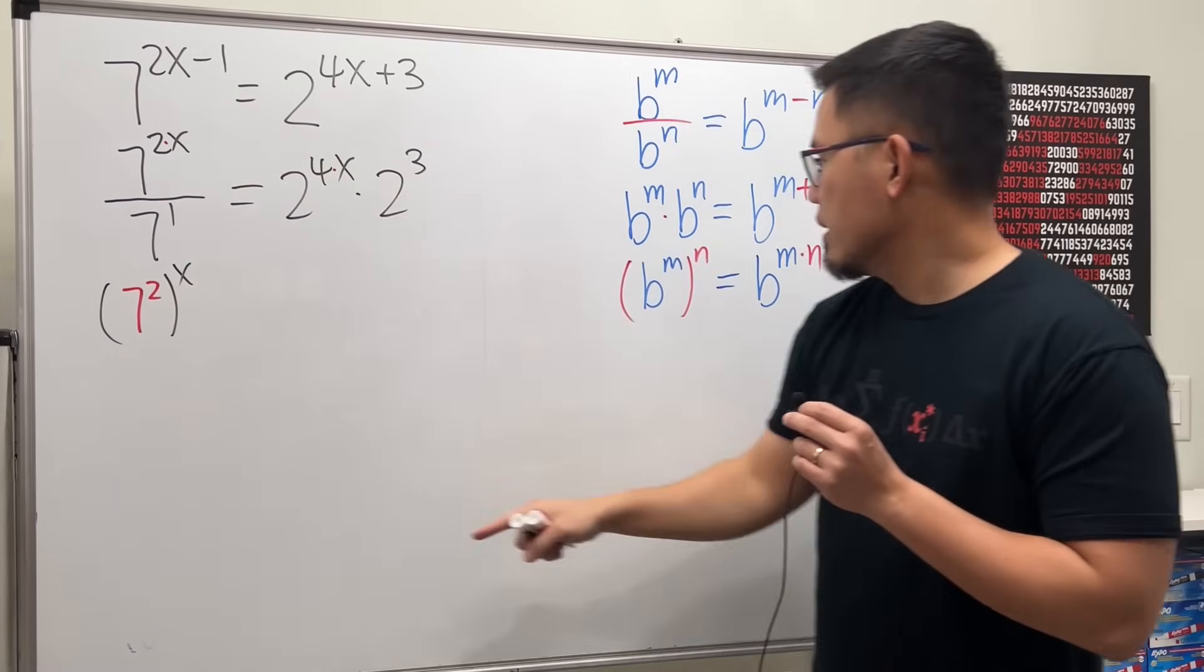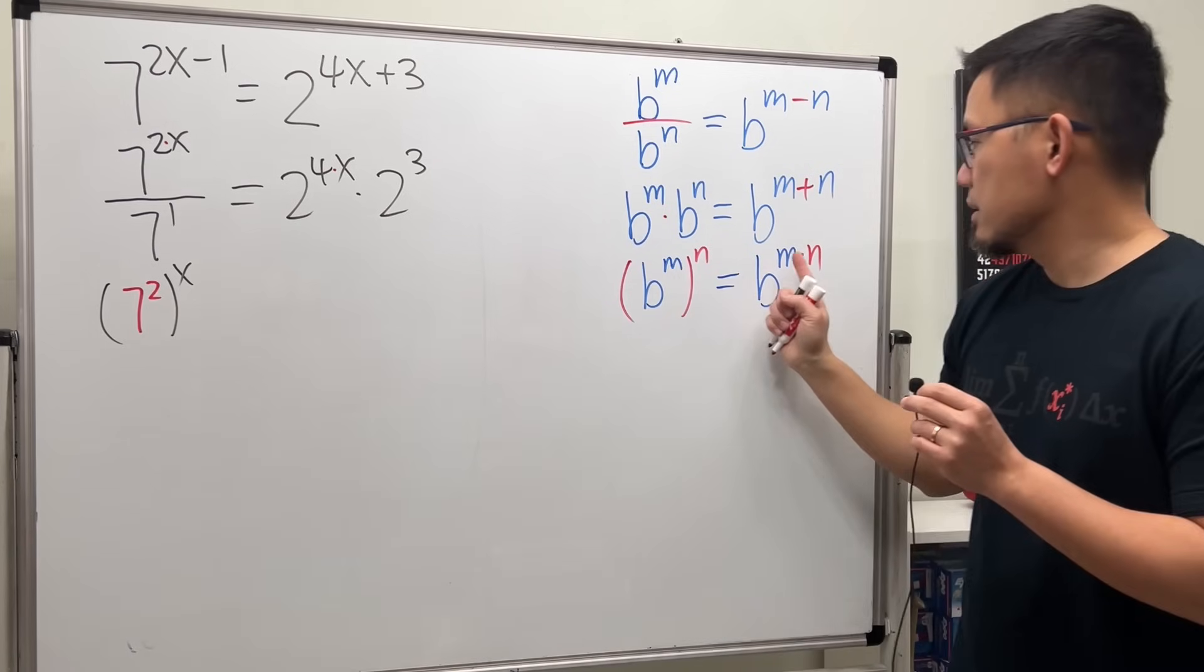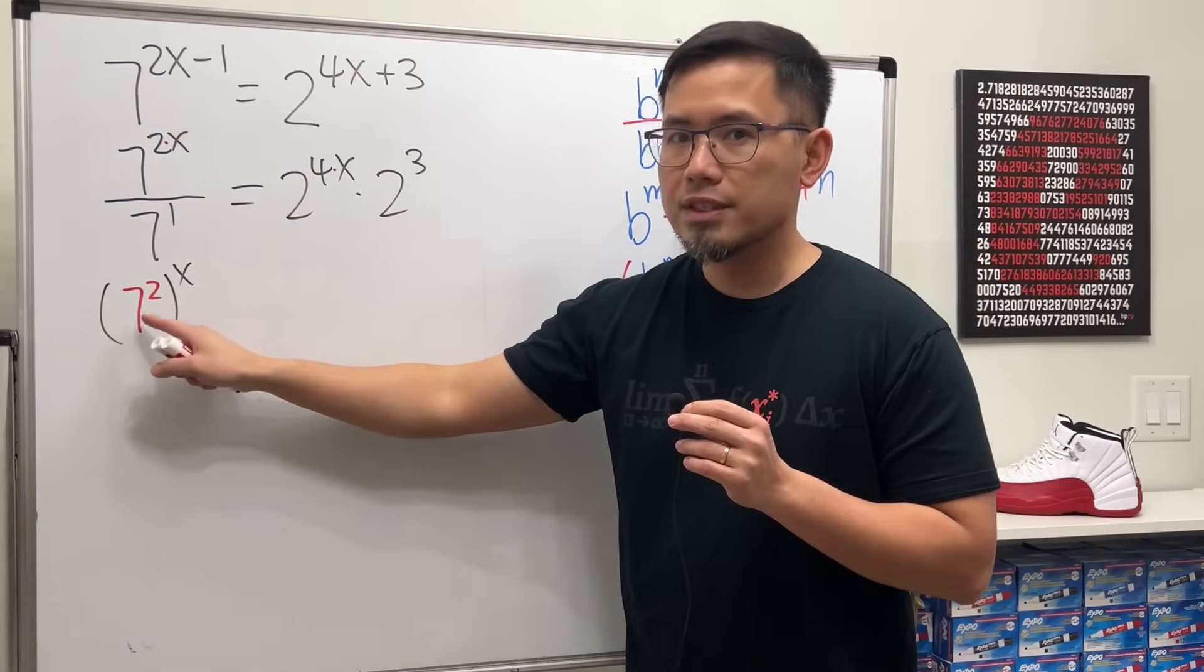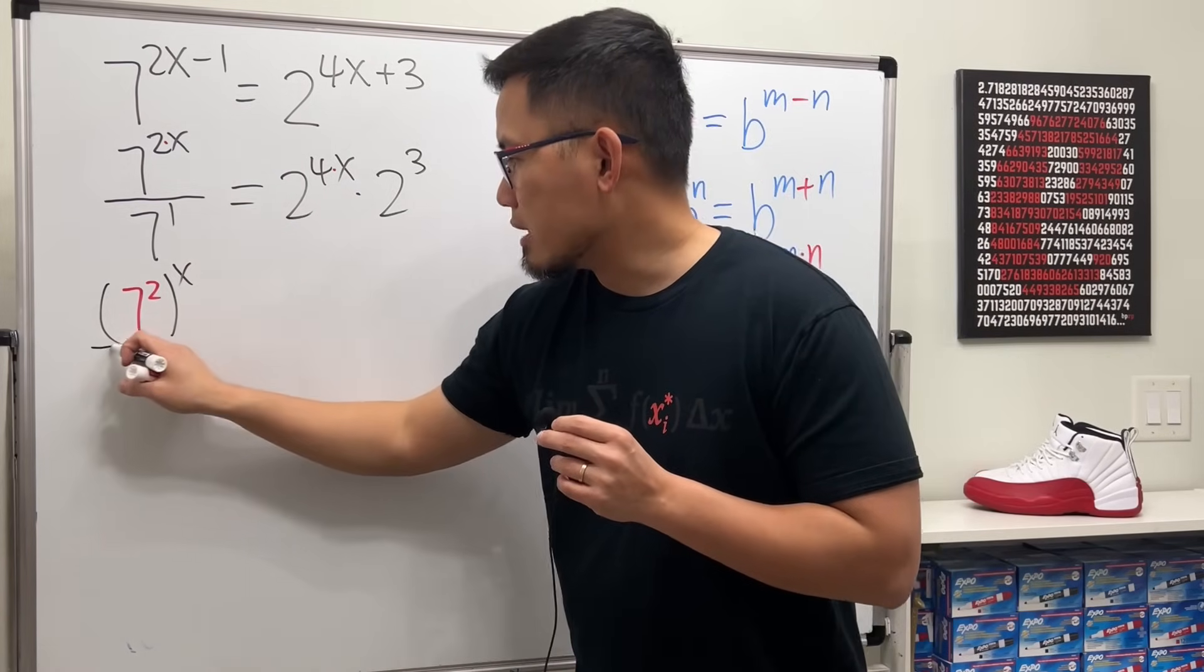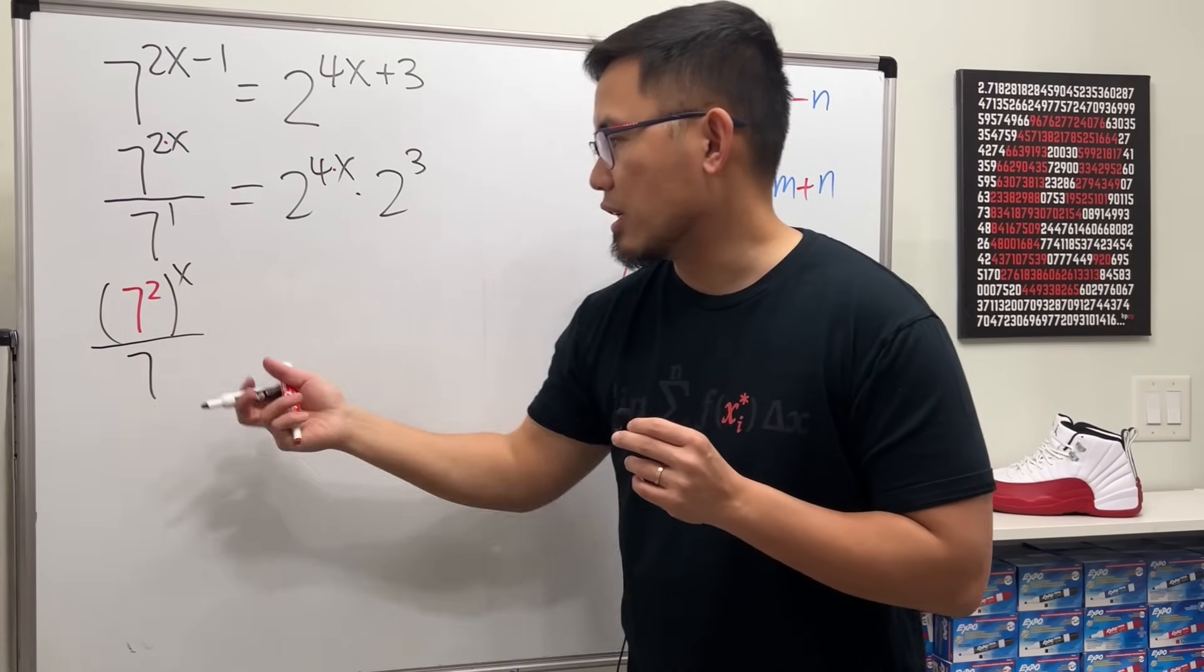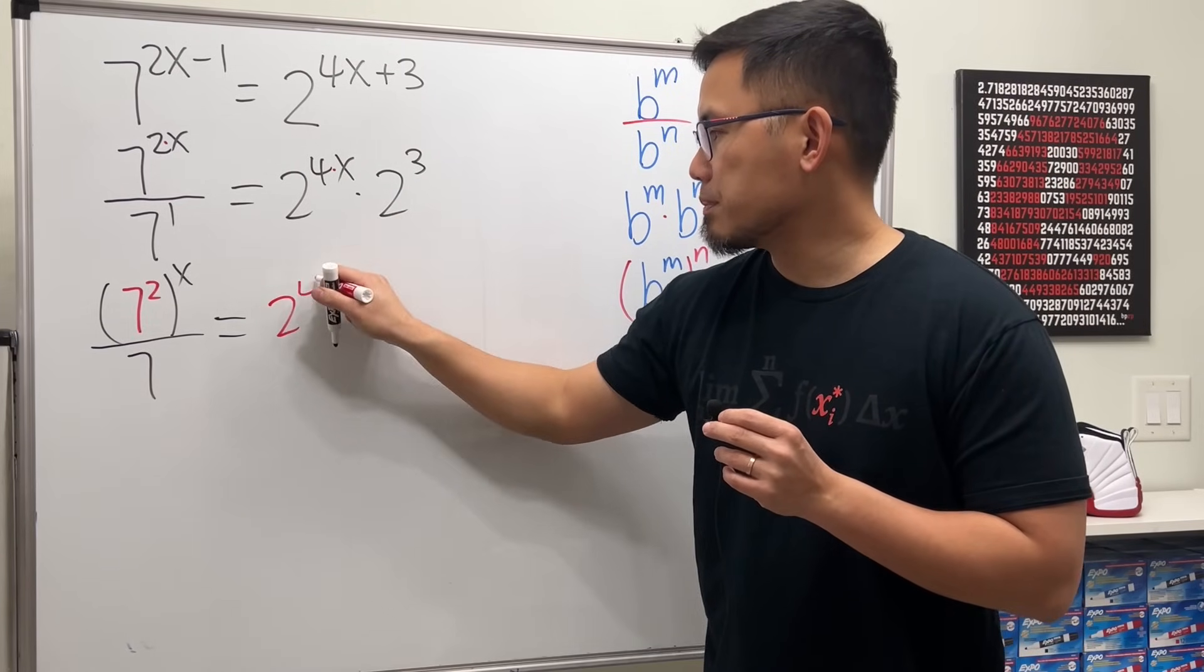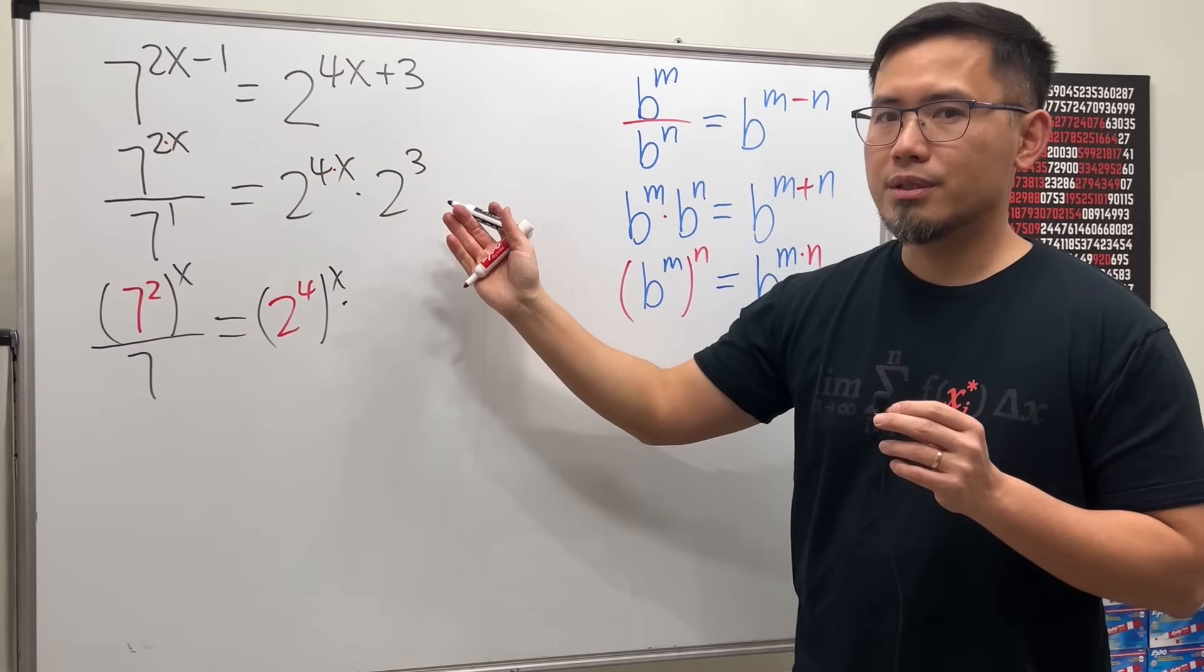The x right here is like the n, and you see that we have 2 times x. So, we can do this right here first. 7 squared to the x power is indeed 7 to the 2x power. And then, on the bottom, over 7 to the 1st is just 7. Same thing here. Let's write it as 2 to the 4th power, and then raised to the x power, times 2 to the 3rd power is 8.